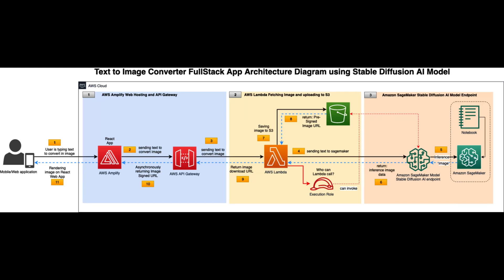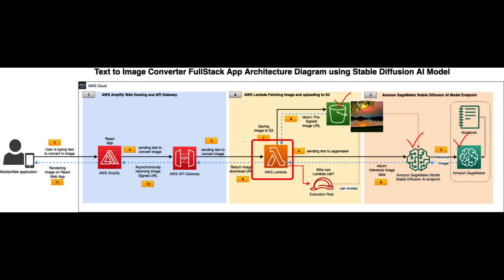As per our architecture diagram, following from the right-hand side, we have already created the SageMaker endpoint and the S3 bucket. Now it is time to create the AWS Lambda function, which will make a call to SageMaker to get the image data and then save that image into the S3 bucket.